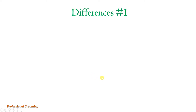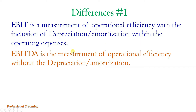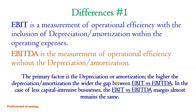What are the main differences between both? Difference number one: EBIT is a measurement of operational efficiency with the inclusion of depreciation or amortization within the operating expenses, whereas EBITDA is the measurement of operational efficiency without the depreciation or amortization expense. The primary factor is the depreciation or amortization expense — the higher it is, the wider the gap between EBIT and EBITDA.